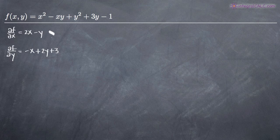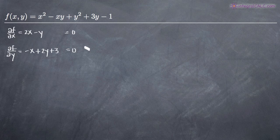Now that we have our first order partial derivatives, we need to solve this system of equations for a coordinate at which we can evaluate the function to see whether or not it's a maximum or minimum. We'll set both partial derivatives equal to zero. Moving constants to the right hand side gives us 2x - y = 0, and for the second equation, -x + 2y = -3.